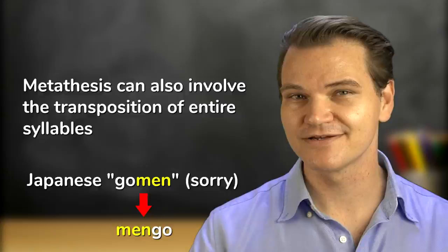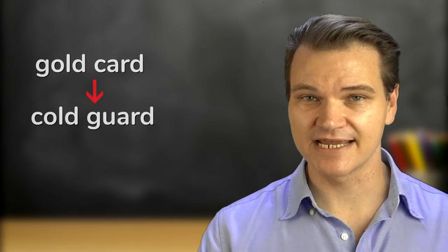It's often a momentary error. Sometimes people might get confused or nervous, or they're thinking about two overlapping concepts at the same time, so they say the wrong thing. For example, maybe they intend to say 'gold card' but they say 'cold guard'. Also, children sometimes make errors like this when they misperceive the sounds of a word or have trouble reproducing them. A common example is 'paschetti' instead of 'spaghetti'.